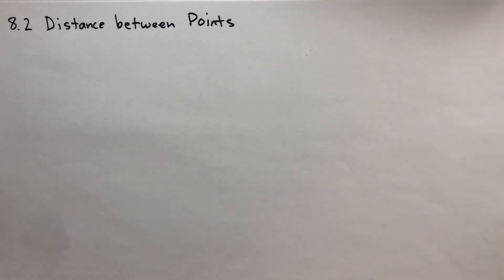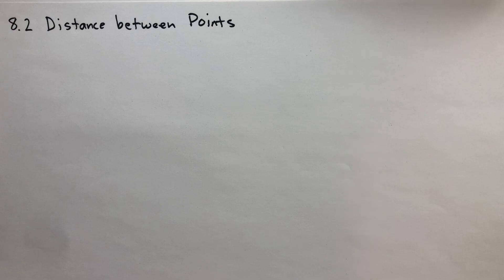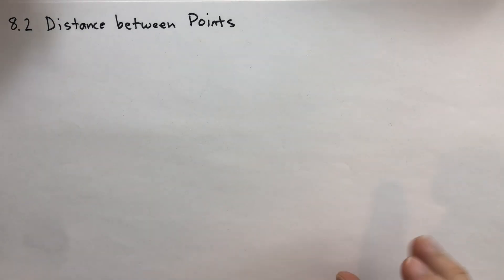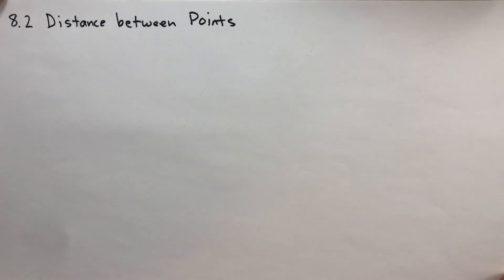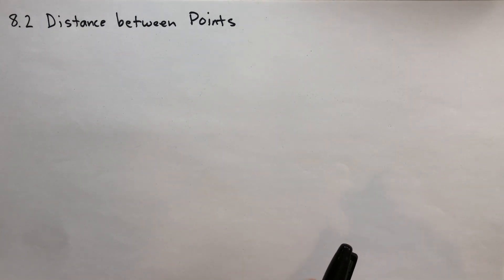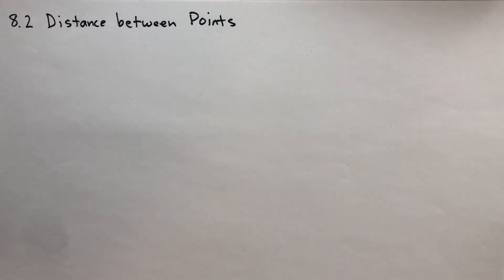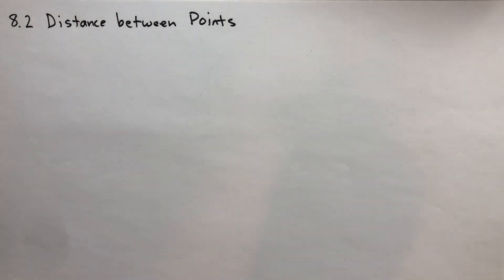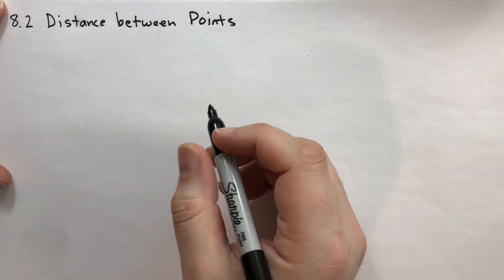Hey guys, welcome back. This is Jonathan Gardner. We're covering section 8.2 of Serge Lang's Basic Mathematics. In this section we're going to calculate the distance between points using this new notation — the point notation — where we have points defined as pairs of real numbers. This is going to show you how you can derive geometry from just a number system.